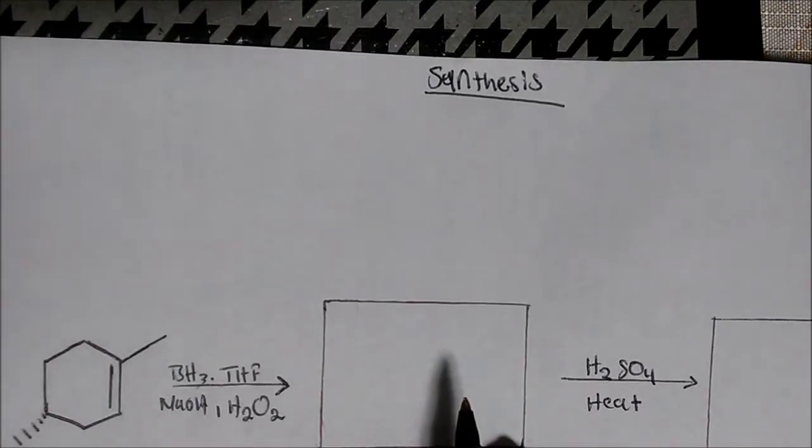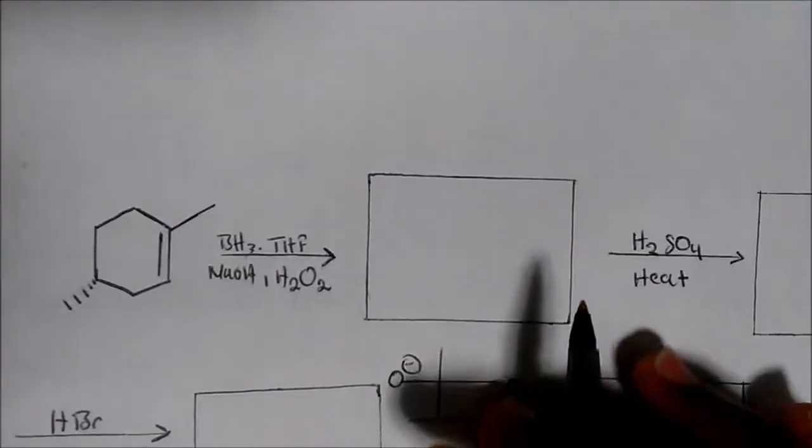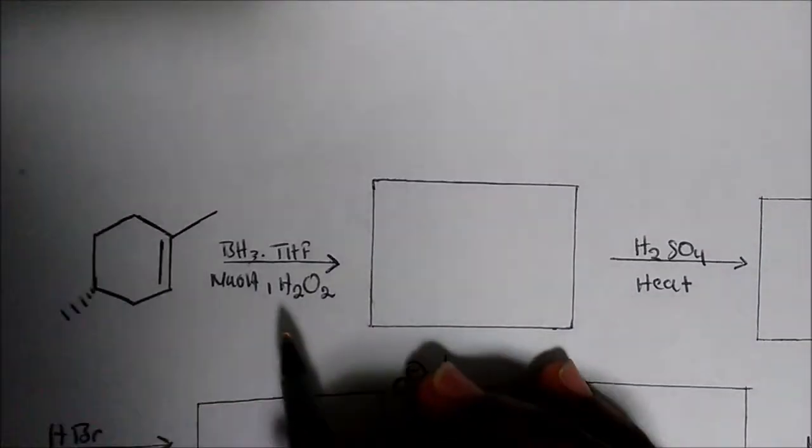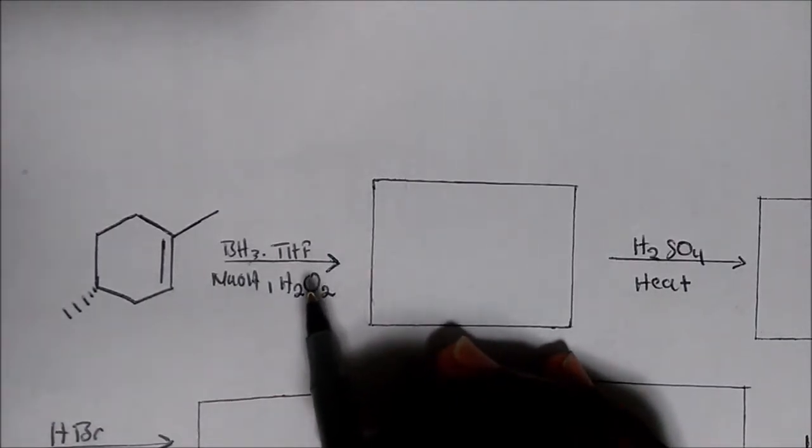Today we're going to talk about a synthesis problem of alkene. So what if you were given on an exam, you're given some starting material like this, and we were to predict the products and kind of fill out this box here. How would we do it?